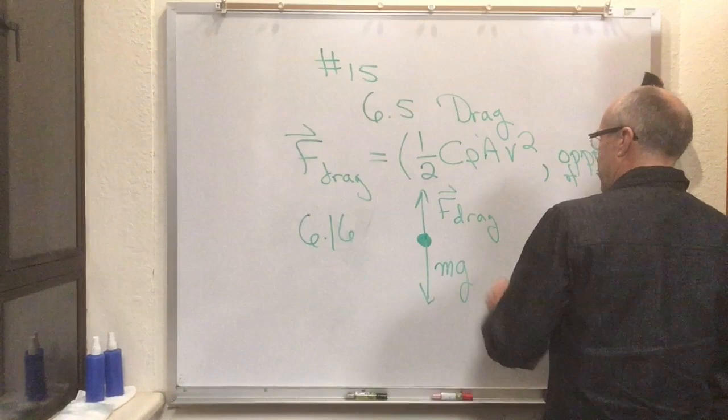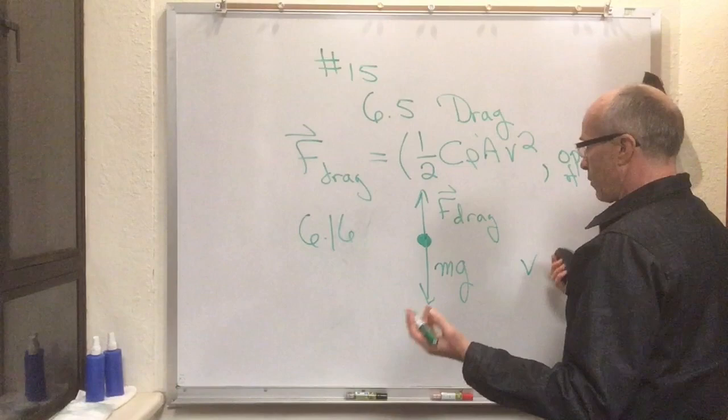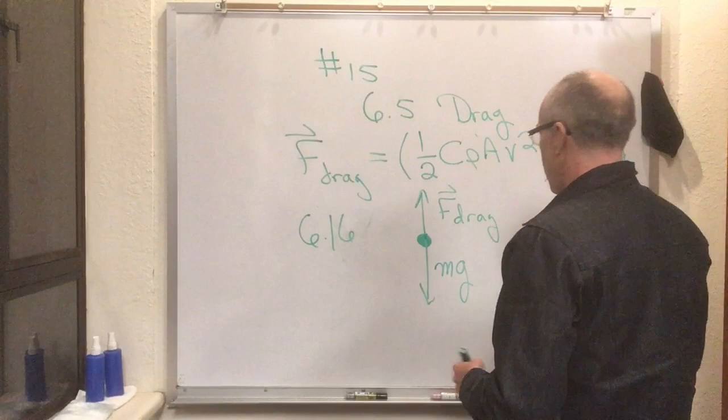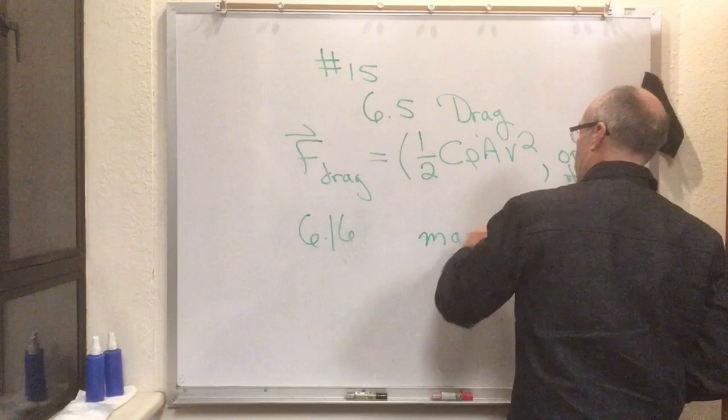But at some point it's going to pick up so much speed that the drag force is going to equal the gravitational force. So we have mg in the downward direction and F_drag in the upward direction, and what we need to do is just equate those two things. And when the velocity has risen so high that this force equals that force, then it doesn't accelerate anymore.